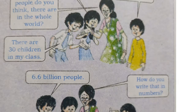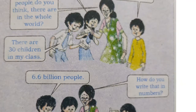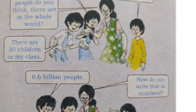Let us understand the distribution of population using the comic figure in your textbook on page number 66. The boy says his village has 1000 people. One girl says there are 500 children in her school. Another boy says there are 30 children in his class. A lady asks how many people are in the whole world.